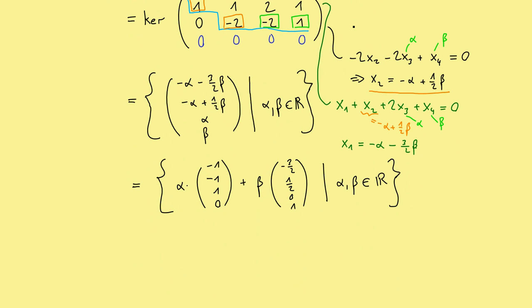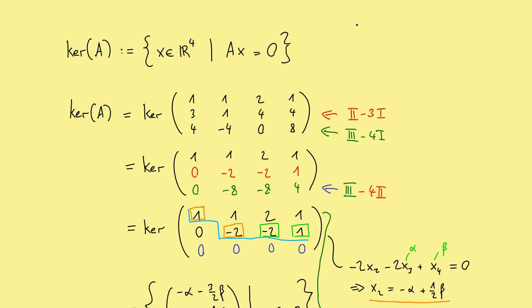And by our calculation, we know that these two vectors here are linearly independent. And therefore, build a basis of the kernel, of this kernel of A. That means, for this example, the kernel is a two-dimensional subset of R4.